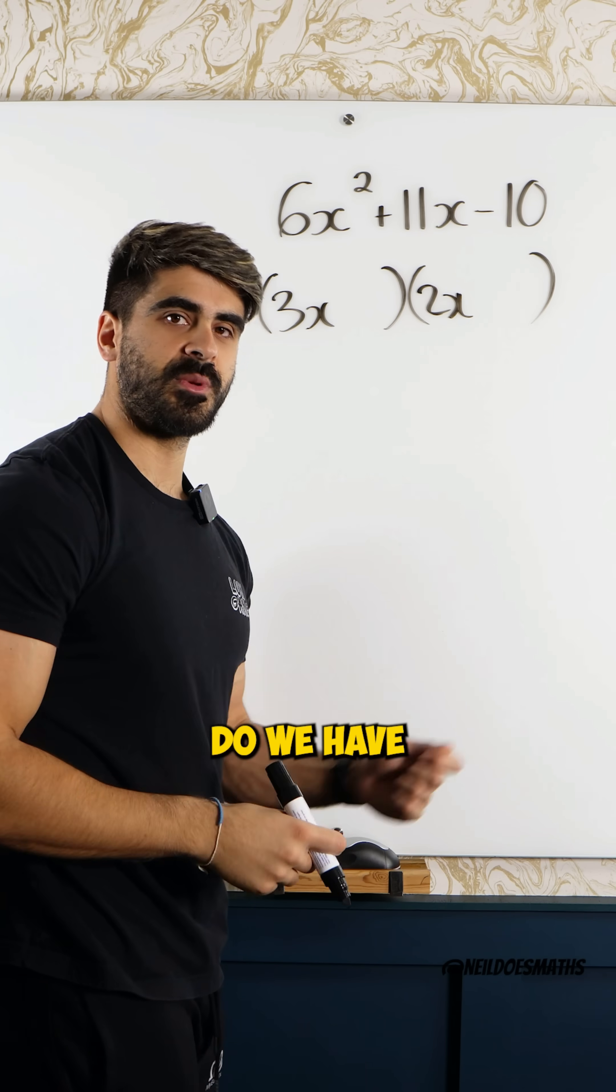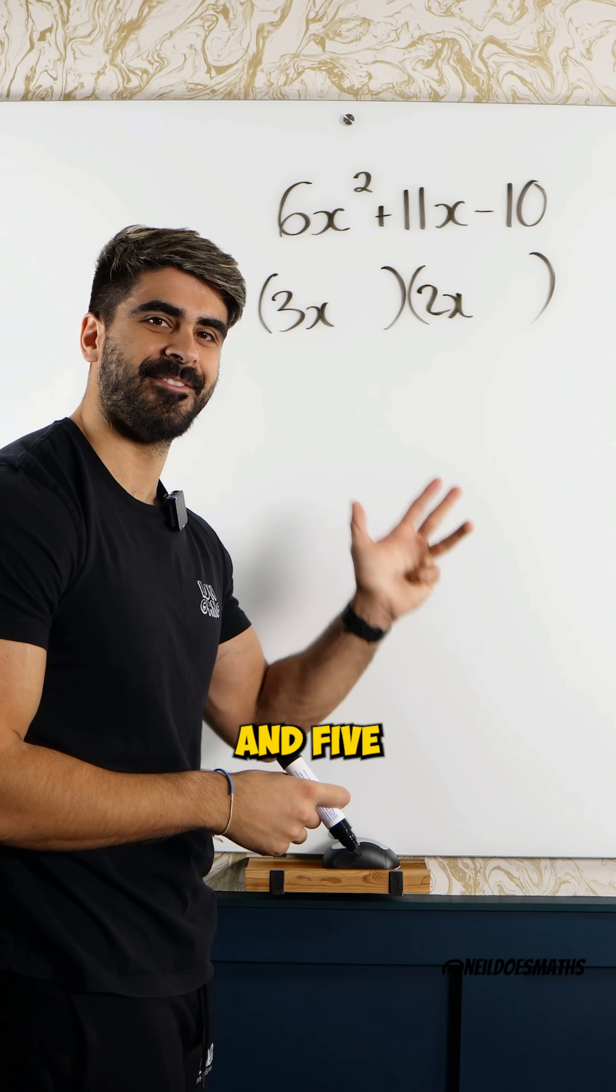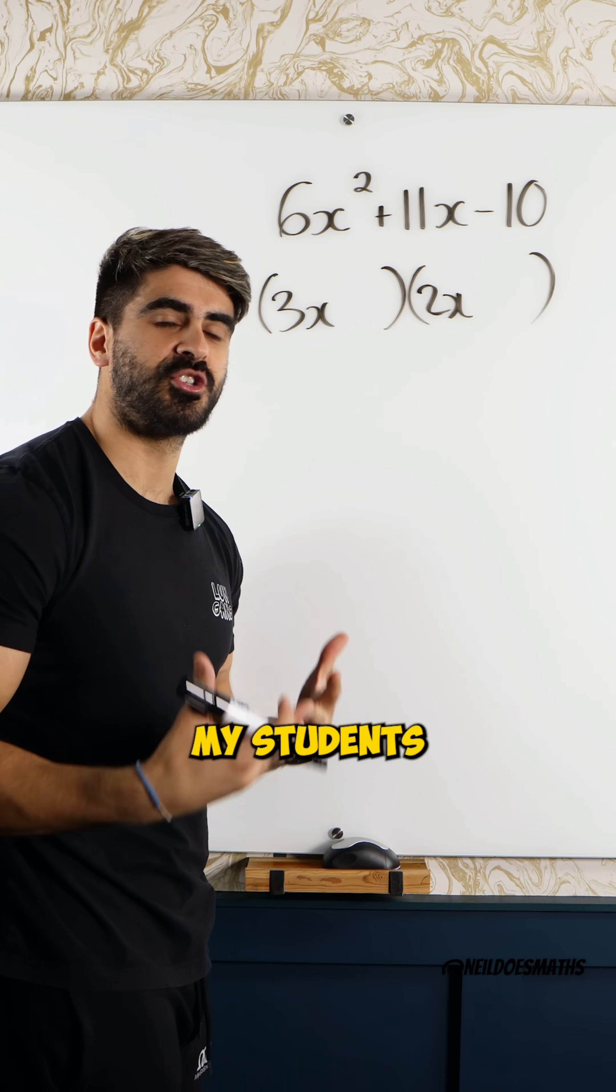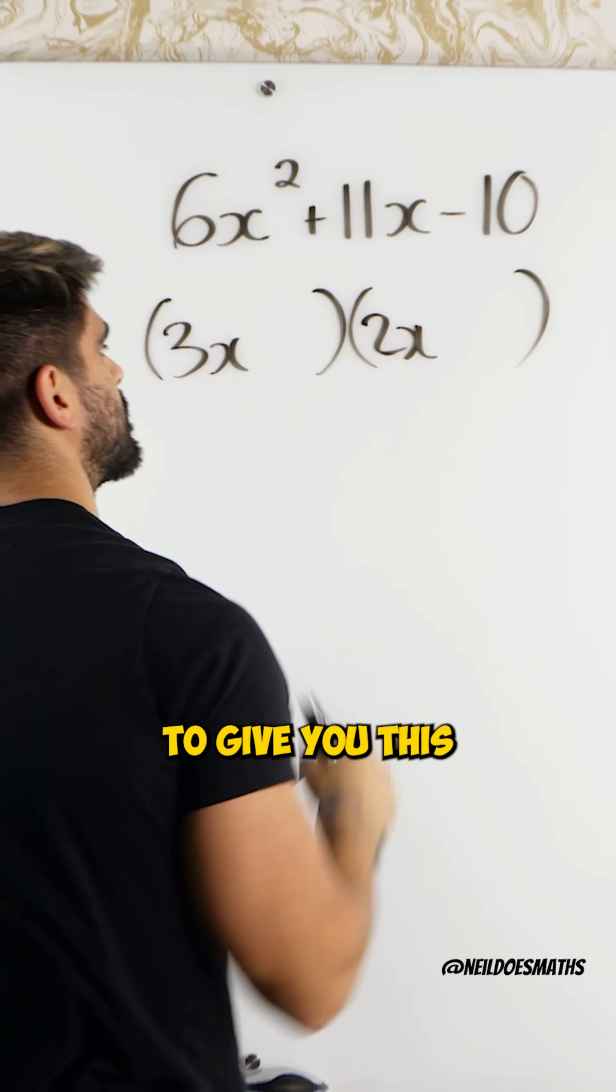10. What options do we have? 1 and 10, 2 and 5. Again, I tell my students to pick the options that are closest together because they're going to go here because they multiply to give you this.